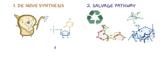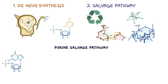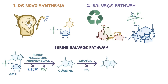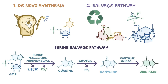Let's focus on the purine salvage pathway. In the case of GMP, the enzyme purine nucleoside phosphorylase first removes the ribose and the phosphate from it, turning it into guanine. Next, another enzyme called guanase removes an amine group, turning guanine into xanthine. Finally, xanthine is oxidized into uric acid by the enzyme xanthine oxidase.